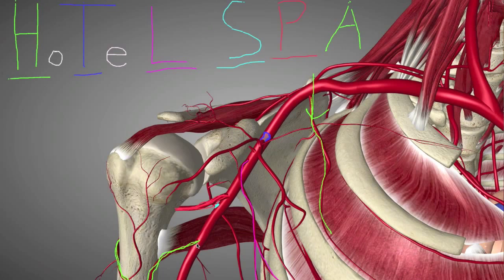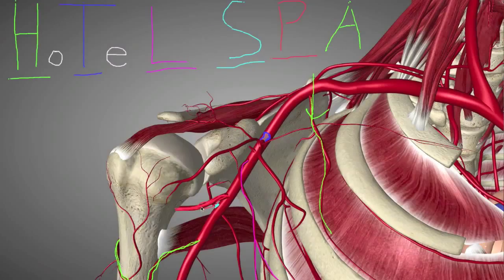Then we have the posterior and anterior humeral circumflex arteries. A tip to tell these apart: the posterior humeral circumflex artery is usually a little bit thicker than the anterior humeral circumflex artery. Normally they exit really close together and wrap around the humeral neck. Sometimes they even exit as one structure which then splits into two, but that's not textbook. In most cadavers, you'll see a posterior and a separate anterior humeral circumflex artery that wrap around the humeral neck.